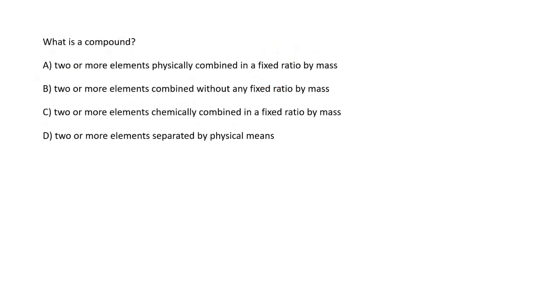What is a compound? The right option is C: two or more elements chemically combined in a fixed ratio by mass. So two or more elements combined in fixed ratio form a compound, and that compound is pure in form.